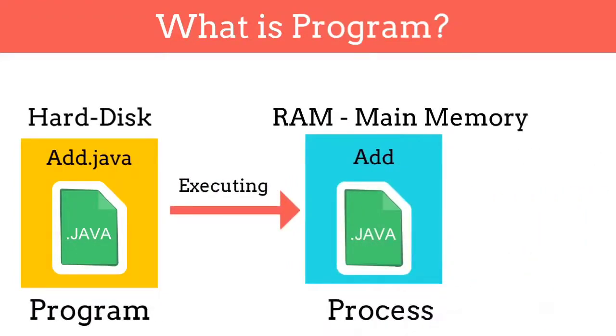Program is just a line of code that we write and it is stored in hard disk. When executing this program, Java will ask for two numbers as an input and then display their addition. This program in execution is called as process.